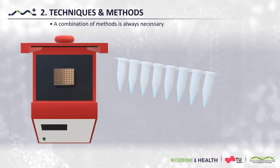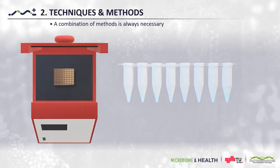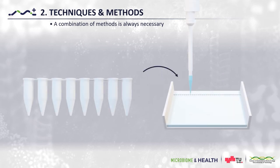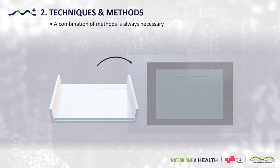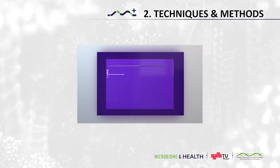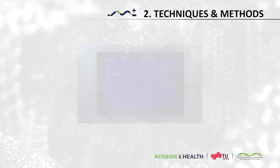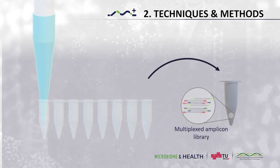We can verify the success of the amplification by using gel electrophoresis, like shown here. Using a standard ladder, it can be assessed whether the amplified DNA has the right size or not. If this is the case, the PCR products are combined all in one tube, creating a multiplexed library ready for next-generation sequencing.